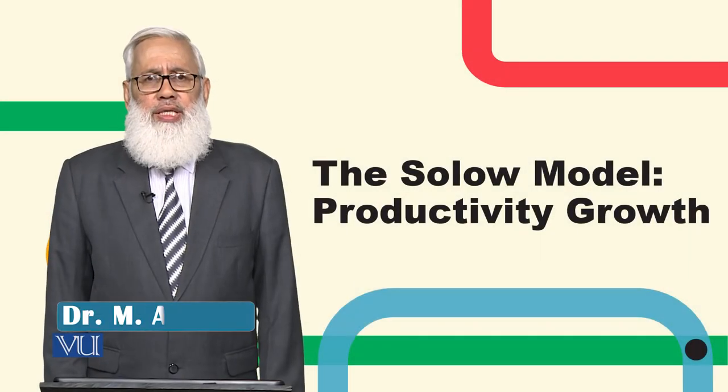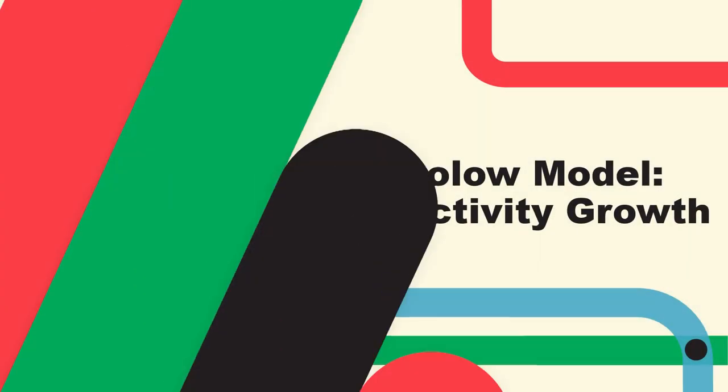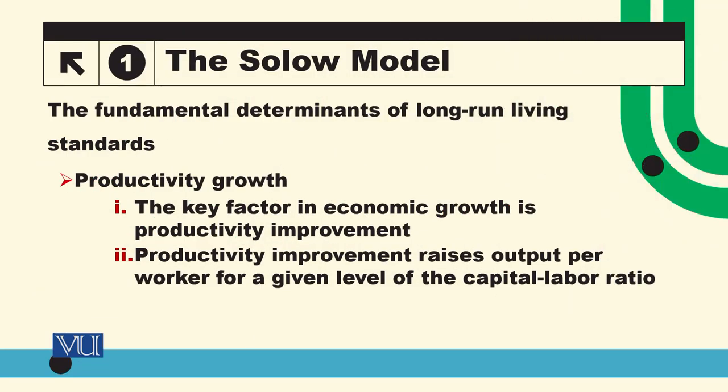The Solow Model: Productivity Growth. Students, we are talking about basic determinants of living standards in the long run. There are three factors that we mentioned: saving rate, population growth rate, and productivity growth rate. We have talked about two, so we will talk about the third factor.